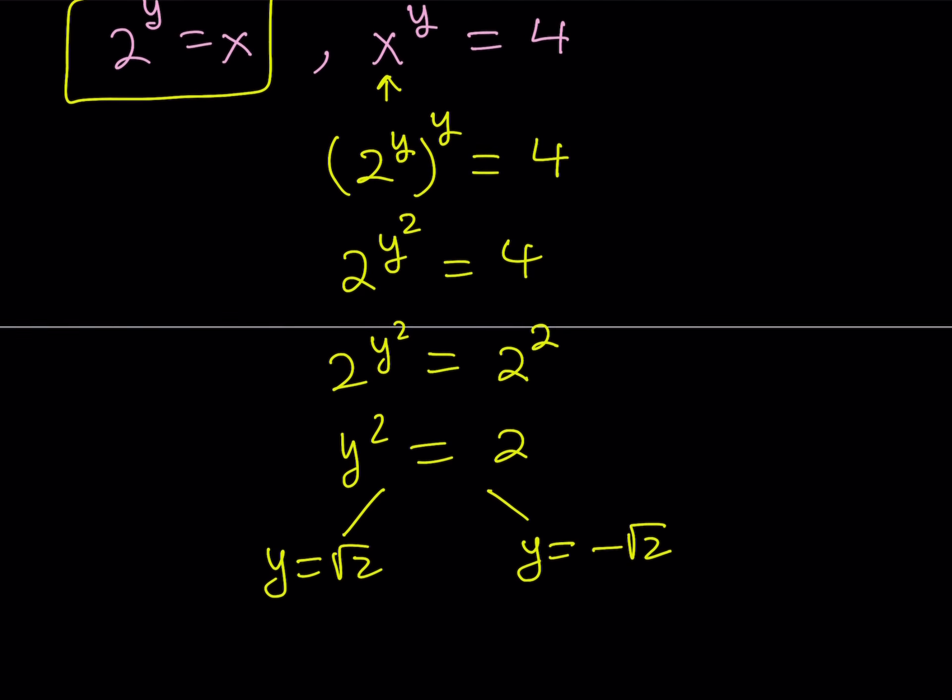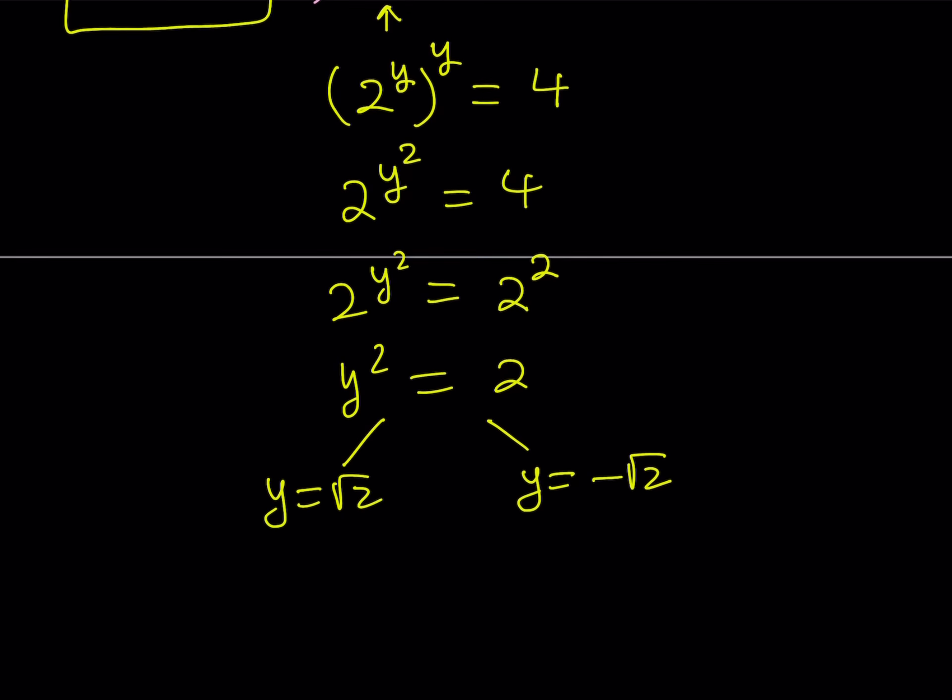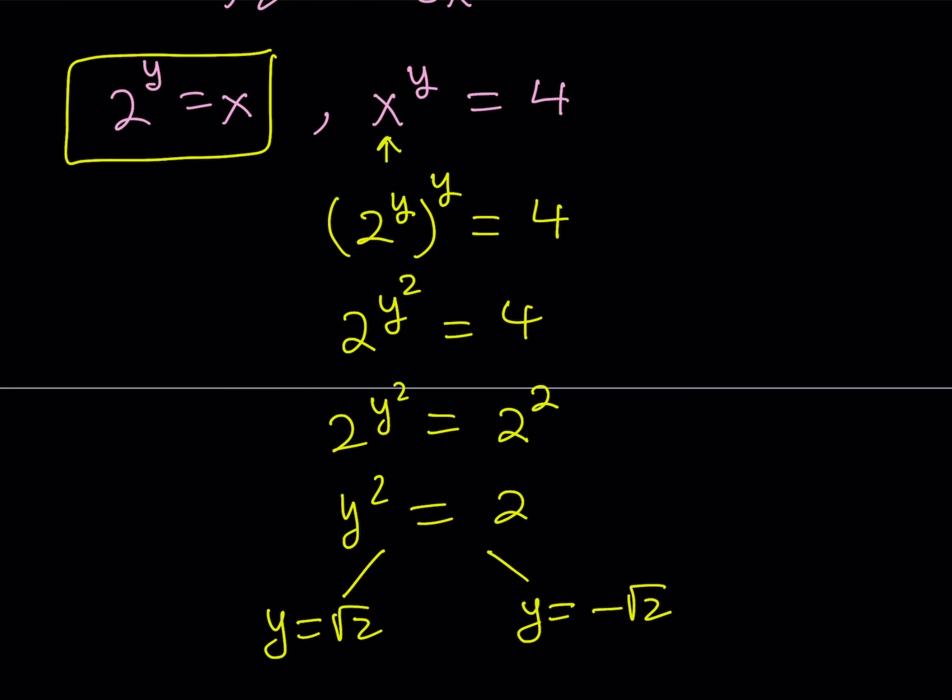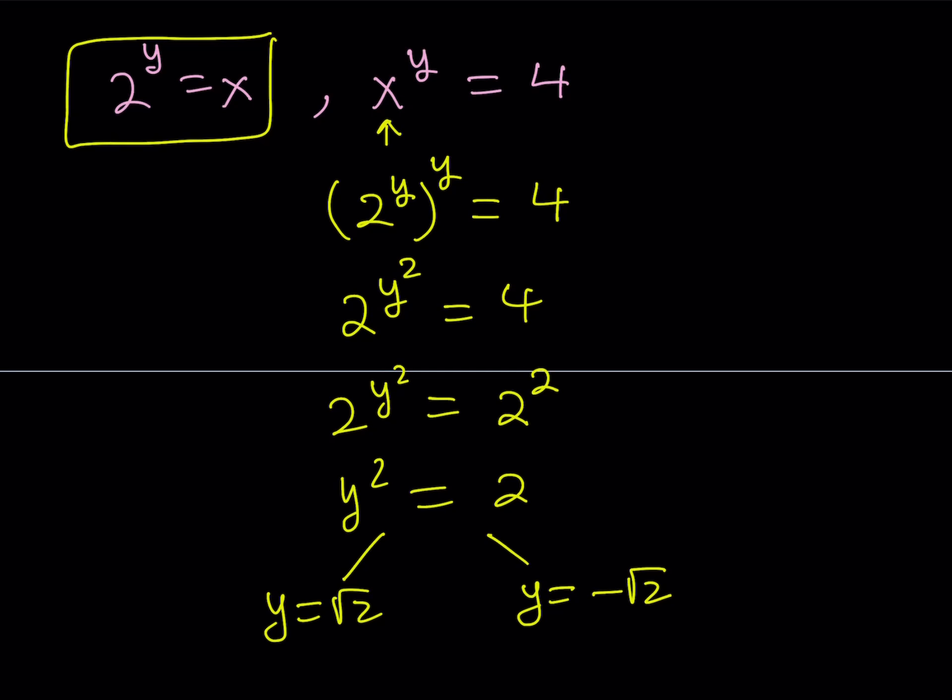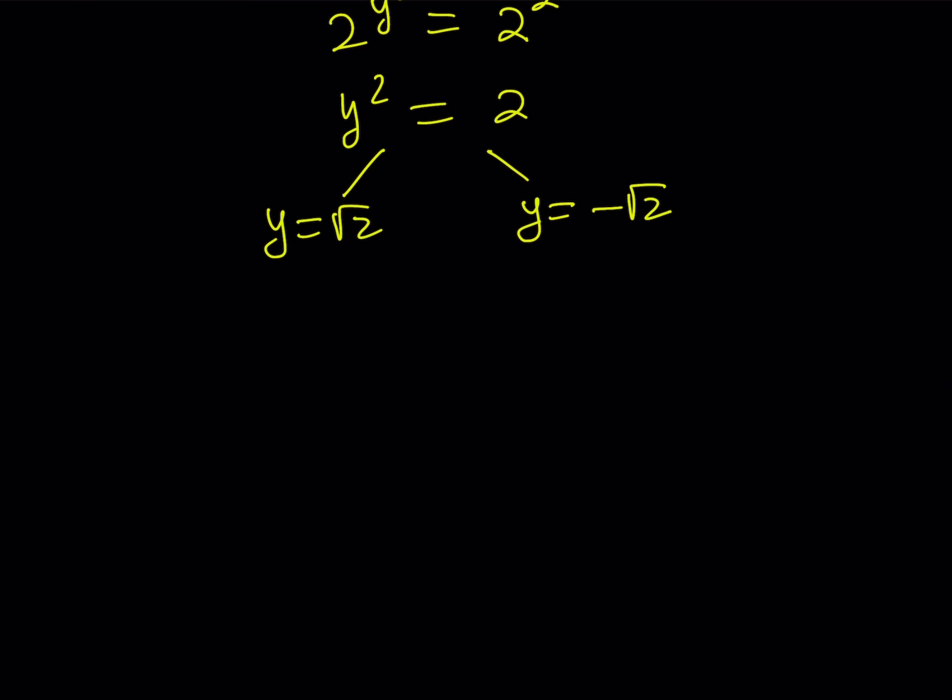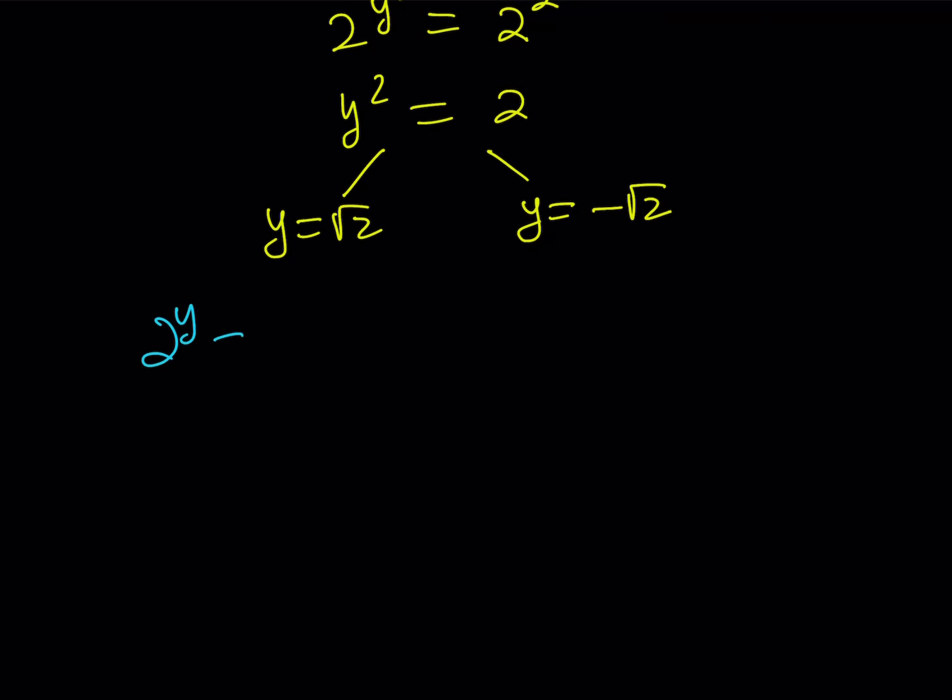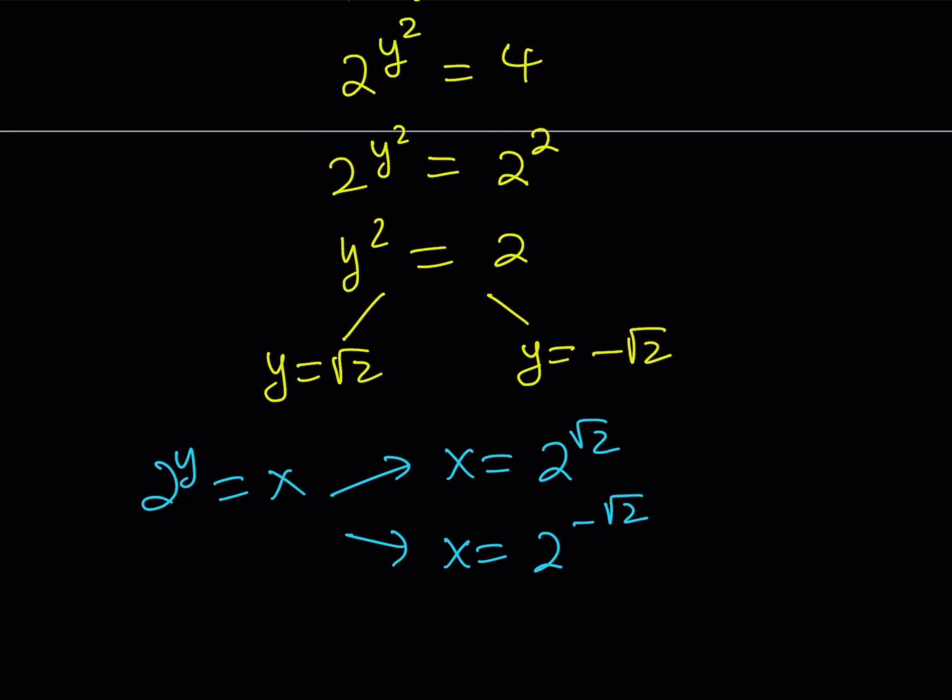Now, if you go back and substitute this into our first equation, now, what happens if you use the second one? Well, you could get away with that as well, but you kind of need to do a little bit more work on that. Maybe we can talk about it real quick. Anyways, the first equation gives us 2 to the power y equals x. So, since 2 to the power y is equal to x, and I'm trying to solve for x, from here, x becomes 2 to the power root 2 or 2 to the power negative root 2. And that's pretty much going to give us what the solutions are.